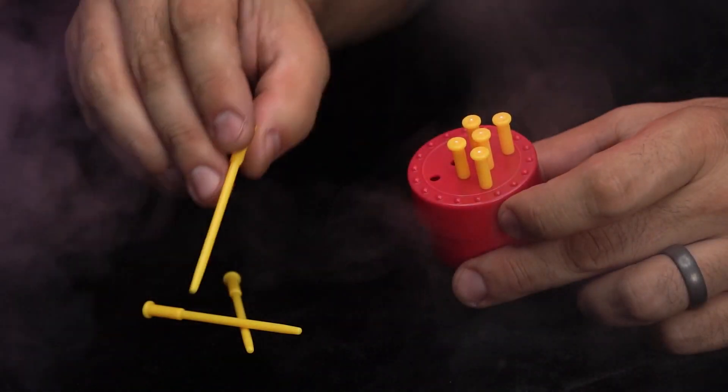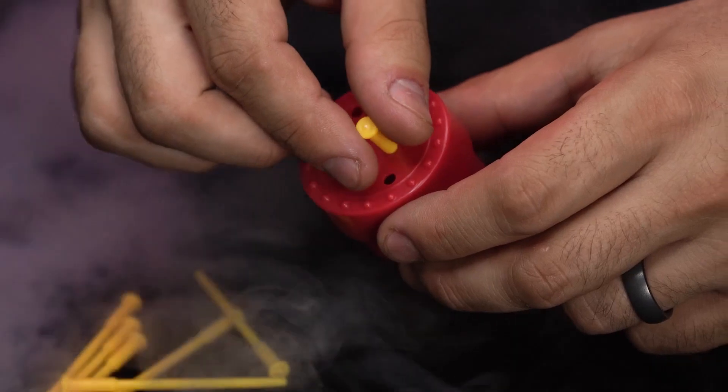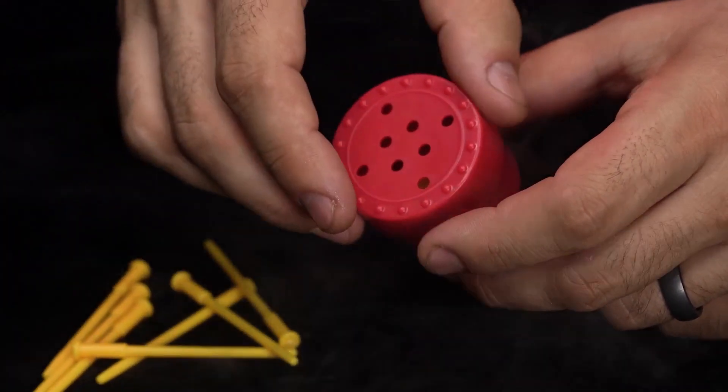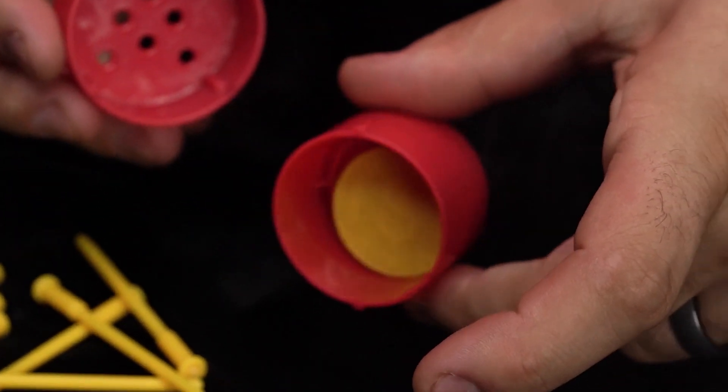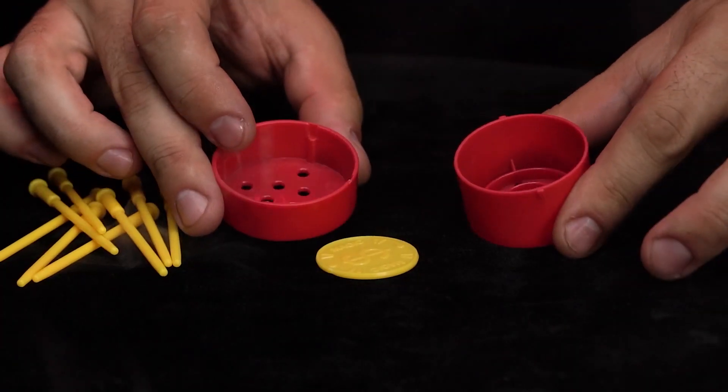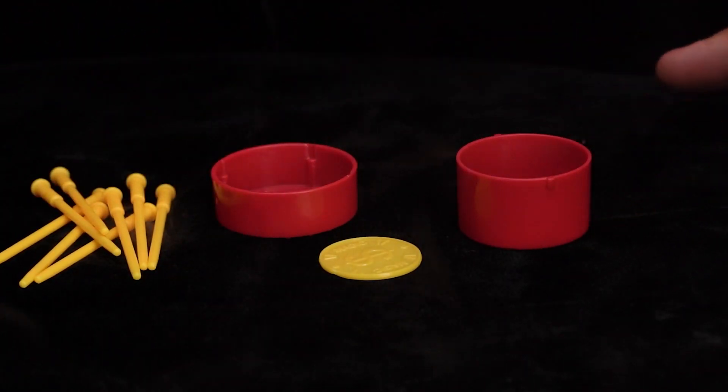After a magical gesture, all the spikes are pulled out and you remove the coin. And to their astonishment, the coin is completely undamaged. Everything can be examined before and after the trick is performed.